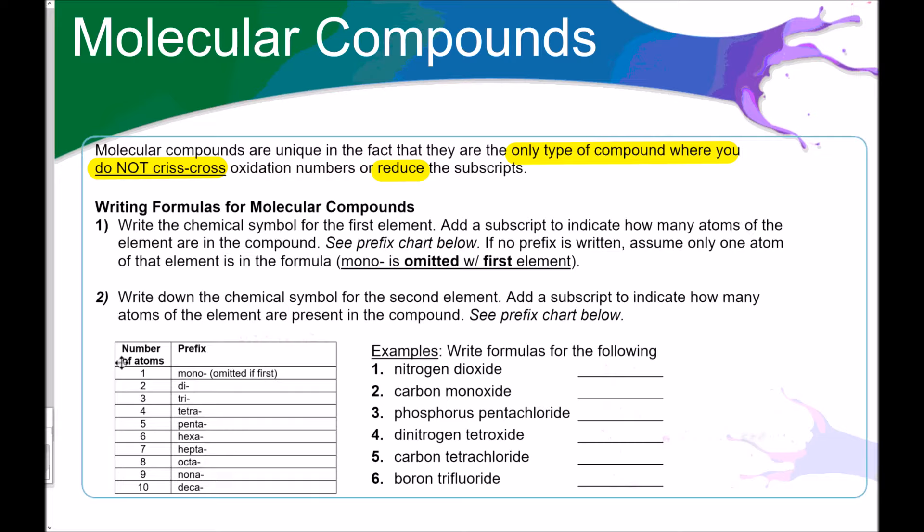Here's the prefix chart. You've got to memorize this. I'm not going to give it to you. One is mono, two is di, three is tri, four is tetra, five is penta, six is hexa, seven is hepta, eight is octa, nine is nana, and ten is deca. With a lot of these like hexa and octa and tri, think of shapes like a triangle has three sides, a hexagon has six sides, an octagon has eight sides. That's usually pretty helpful.